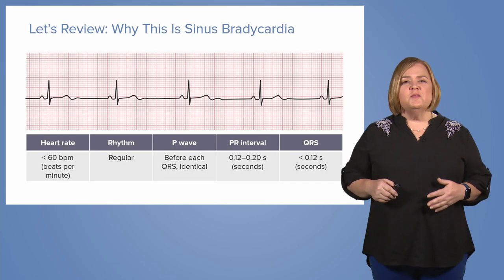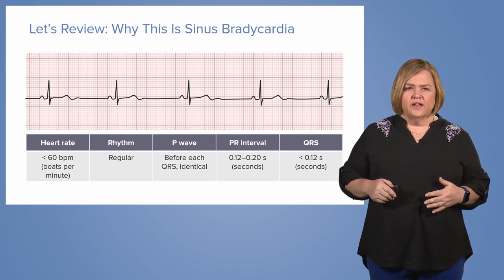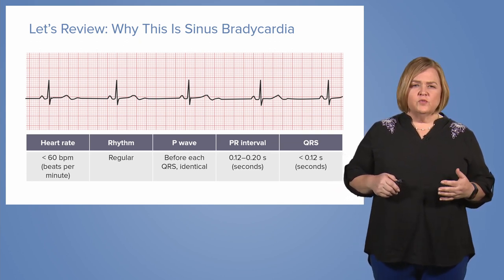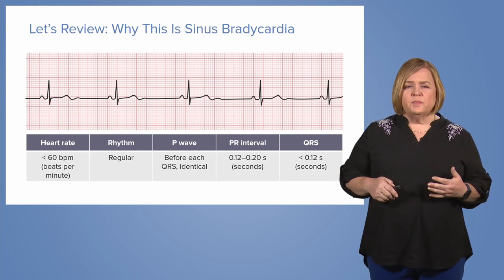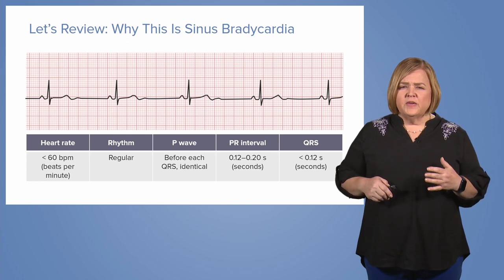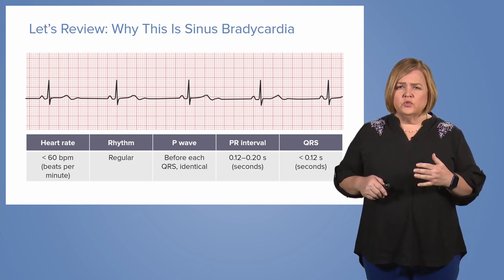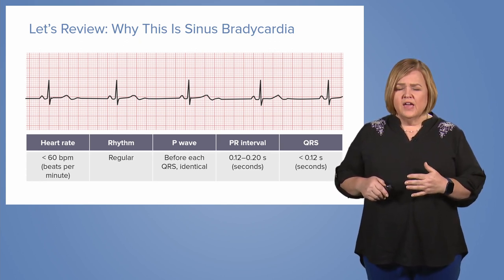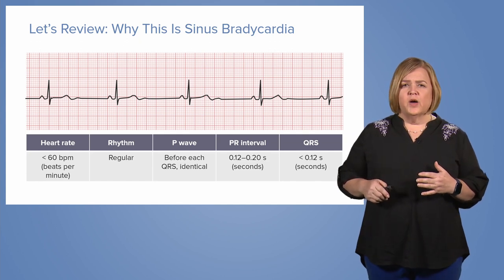Let's wrap up this section on sinus bradycardia. The heart rate will be less than 60, and the rhythm will be regular. The P wave will precede each QRS and be identical. The PR interval will be 0.12 to 0.20, and the QRS will be less than 0.12.